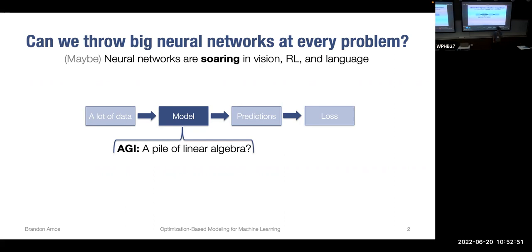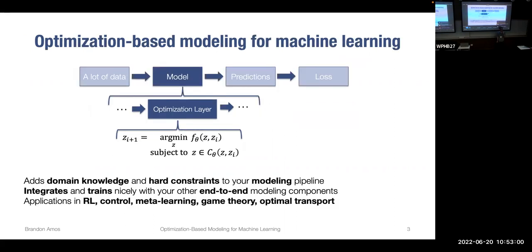However, many problems that people use machine learning to model have an inherent optimization-based structure in the modeling part, rather than just over the parameter space. This talk is not about parameter optimization — rather, it focuses on continuous optimization problems that come up when you want to truly model continuous optimization processes.